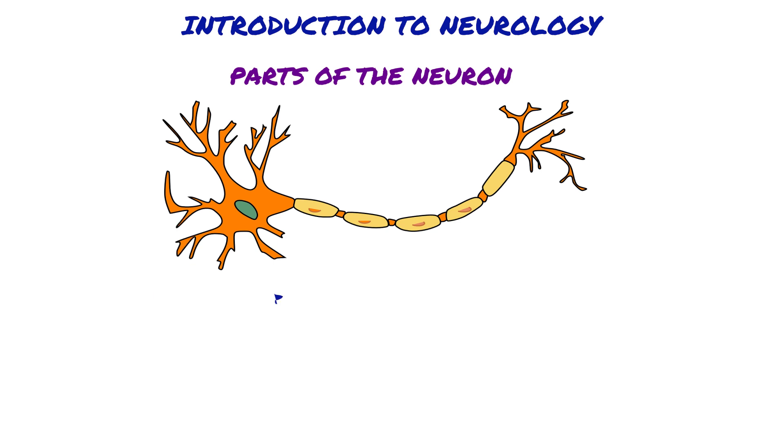The second one is soma, which contains the cell organelles. The last part is axons, which are neuronal processes that transmit stimuli to other neurons or to effector cells.